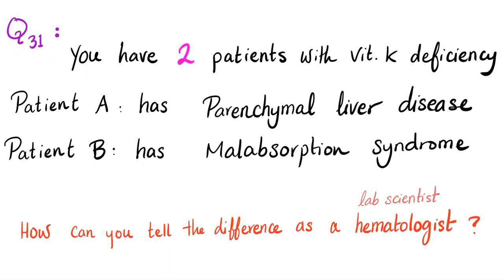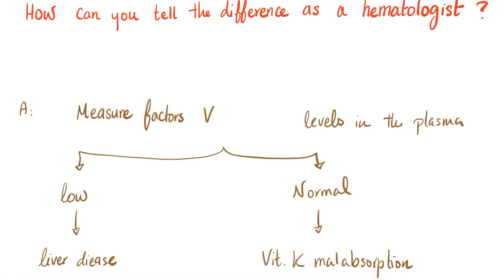Let me answer the question of the previous video. I had two patients with vitamin K deficiency. Patient A had vitamin K deficiency due to a parenchymal liver disease, but patient B had vitamin K deficiency due to a malabsorption syndrome. The question is, as a hematologist or a lab scientist, how can you tell the difference between patient A and patient B?